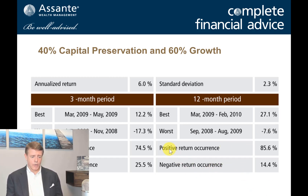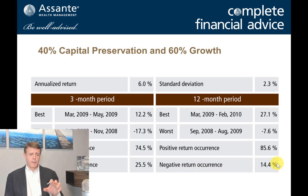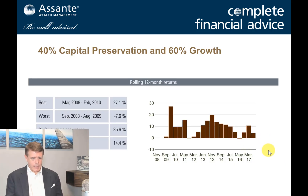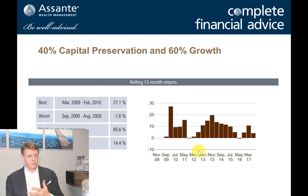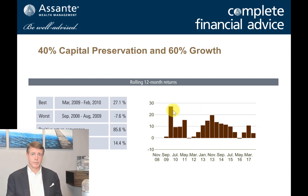Again, if we look at one-year periods, almost 86% of the time was positive and negative occurrences were 14.4%. We're now looking at a chart that summarizes all the data. Over this 10-year period, you can see there were a few years where we had subpar performance on the portfolio. The overall returns of that time period were about 6% a year, but you can see a lot of variability in return just looking at this particular chart.